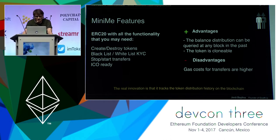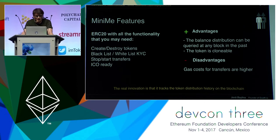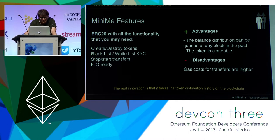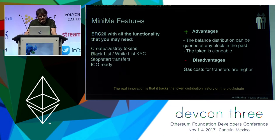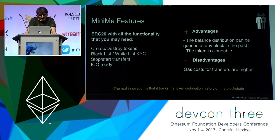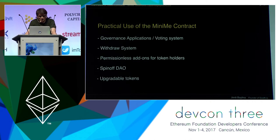The contract tracks the token distribution history on the blockchain. This property is what makes the MiniMe contract different and allows this token to be clonable — forkable if you want. That means that you can create a new token whose initial distribution is the same as the original token. This cloned fork can be done at any given block in the past or can be set for the future. After the fork, each cloned token is independent of each other, much like the ETC fork or Bitcoin Cash fork. All these properties do not come for free, and the main disadvantage of choosing MiniMe token is that the gas cost of each transfer is a little bit higher than the non-clonable ones.